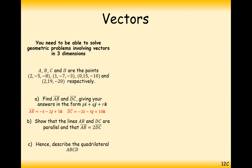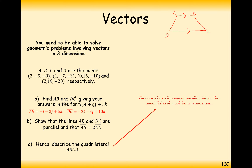Hence describe the quadrilateral ABCD. Here's where we need to think about the properties of quadrilaterals. If we've got one vector AB and another vector CD that's twice as long as it, and given that we've got two parallel lines of different lengths, this now obviously looks like a trapezium to me. So in this case, the quadrilateral must be a trapezium.